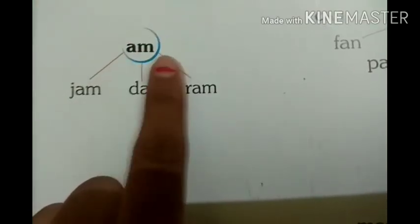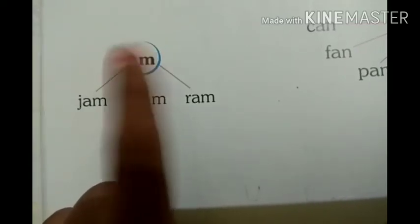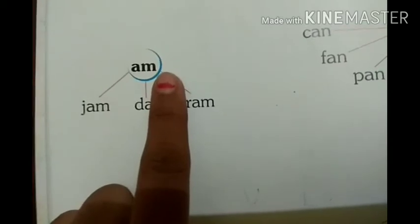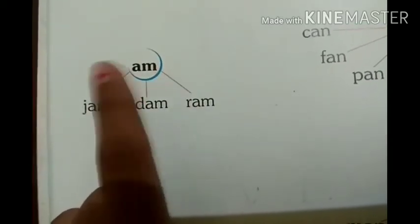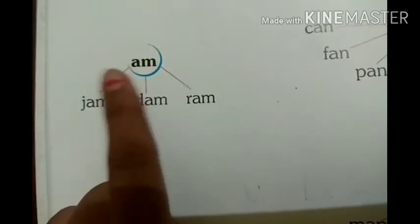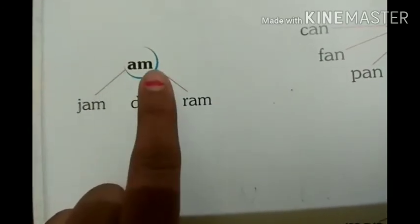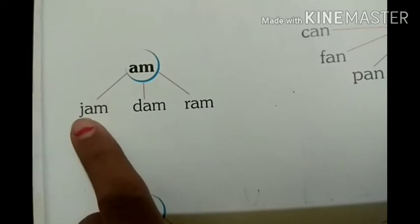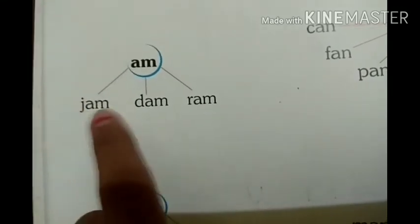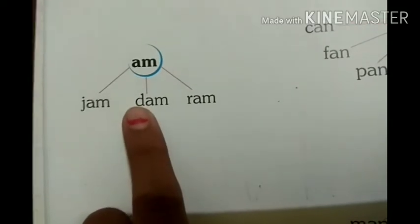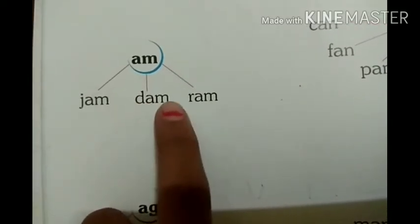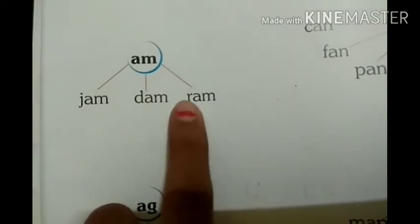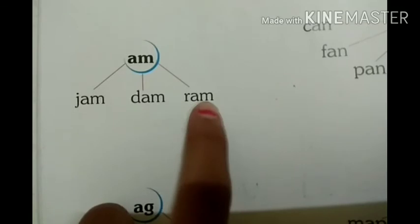Now we take the letters A and M. What is the sound of A? Very good — A. And what is the sound of M? M. A, M — AM. Repeat it with me: A, M — AM. What is the sound of J? J, AM — JAM. What is the sound of D? D, AM — DAM. What is the sound of R? R, AM — RAM.